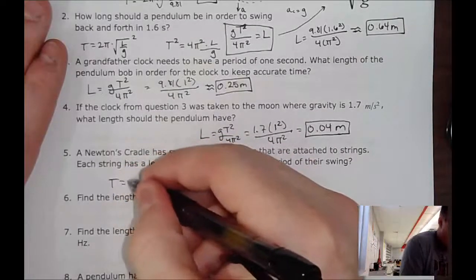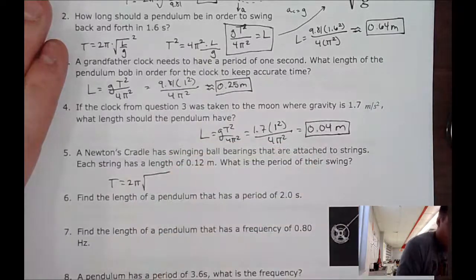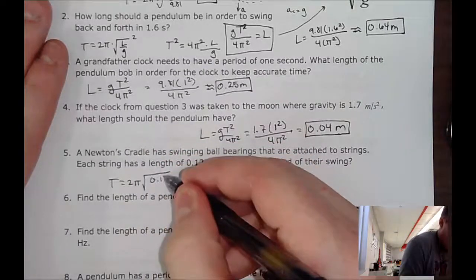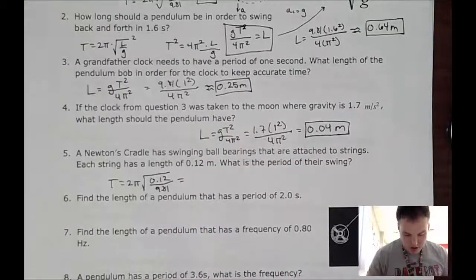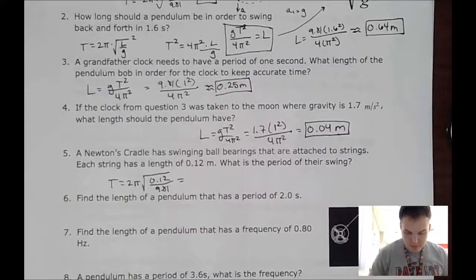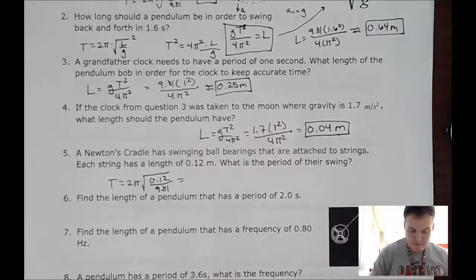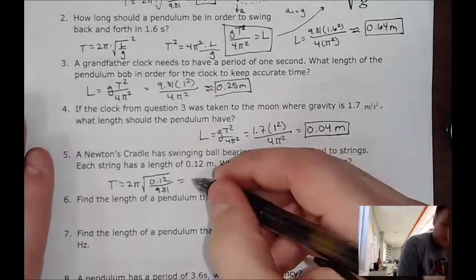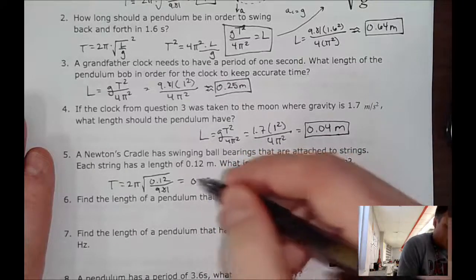So that's 2π times the square root of 0.12 divided by 9.81. I'm assuming we're back on Earth. So let me plug this into our calculators. That gives me a period of roughly 0.69 seconds, approximately.